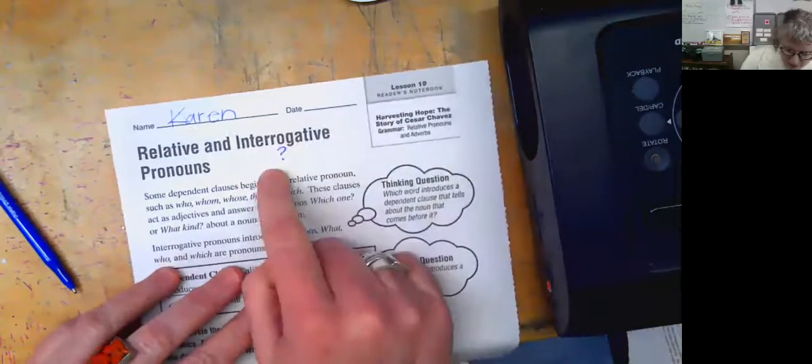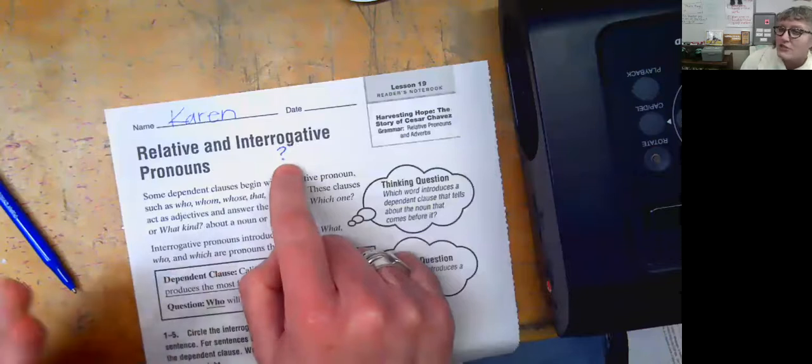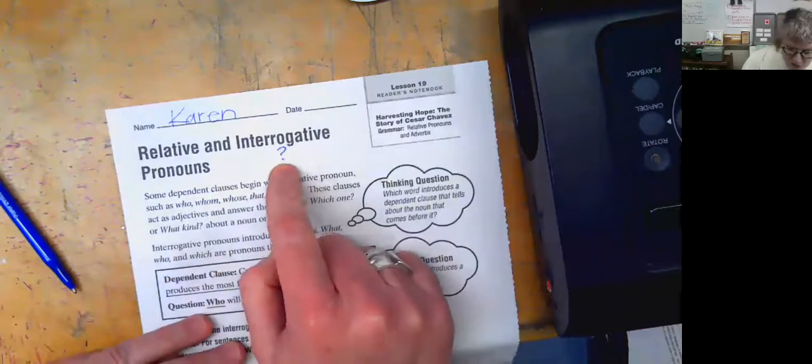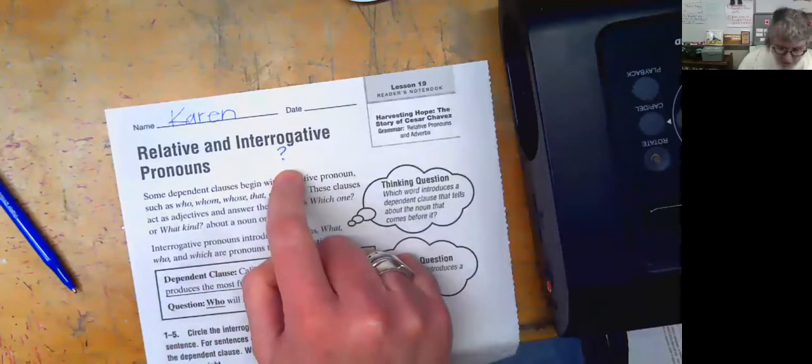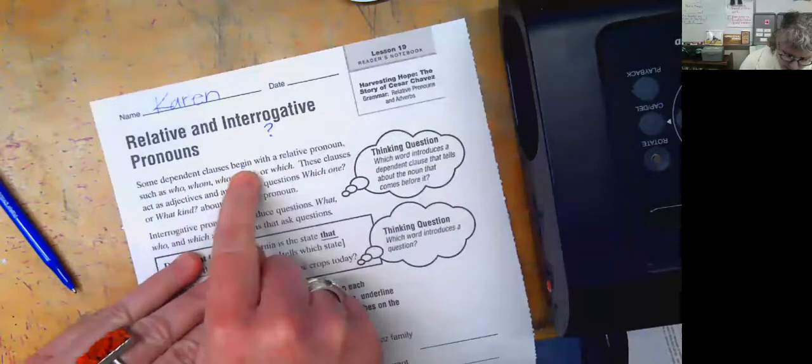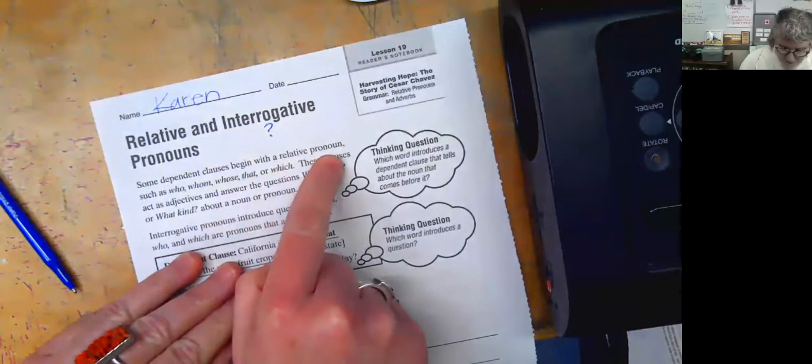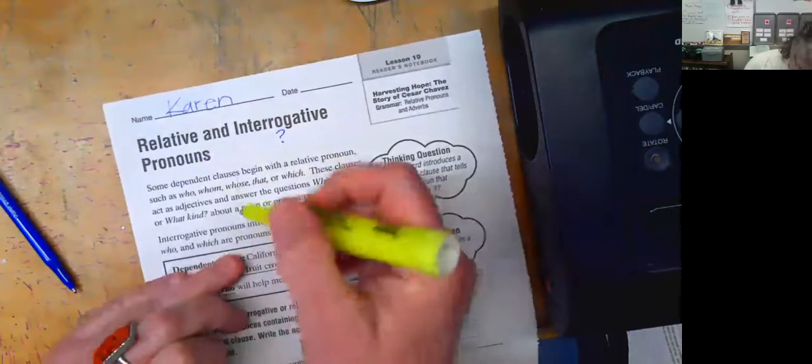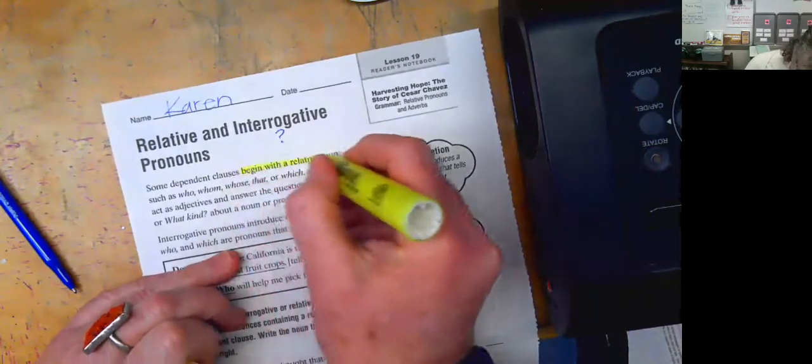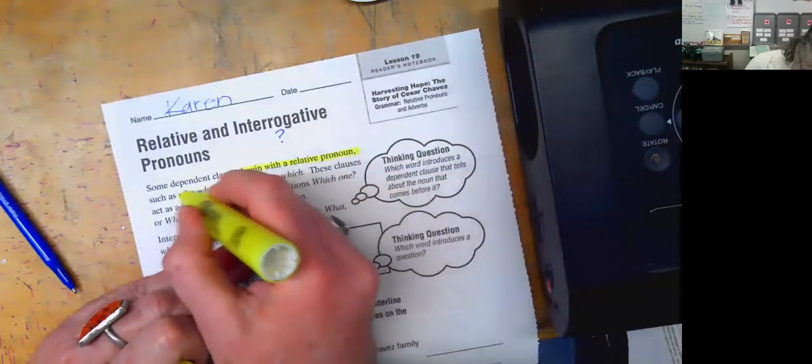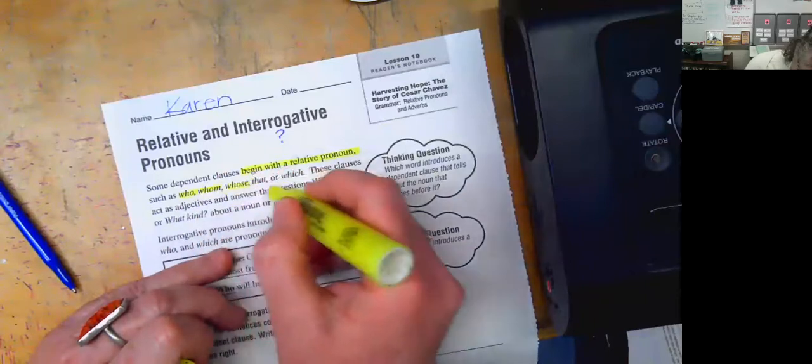So interrogative means that a question is involved, right? That's our question word, our fancy word for questioning. Some dependent clauses begin with a relative pronoun: whom, who, whose, that, or which.